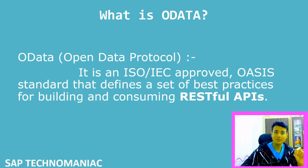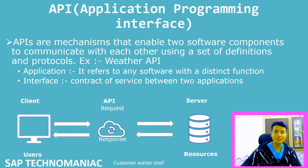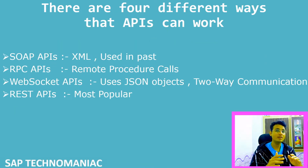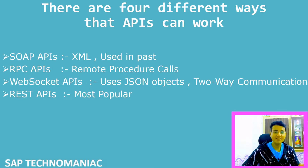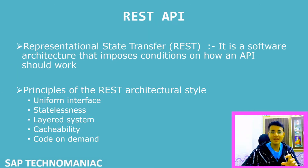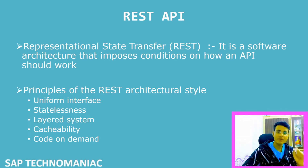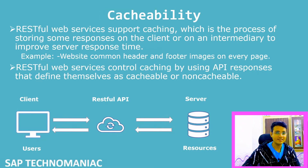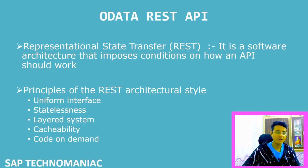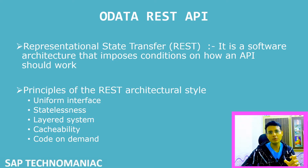OData is a RESTful API. To understand this, first we went through what an API actually is. Then we saw how API works and that it divides into four parts, one of which was REST API. Since OData is a RESTful API, we discussed REST API in detail — how one API can become a REST API. If an API follows all these rules like Uniform Interface, Statelessness, Layered System, Cacheability, and Code on Demand (which is optional), then it becomes a REST API. OData also follows all these rules.